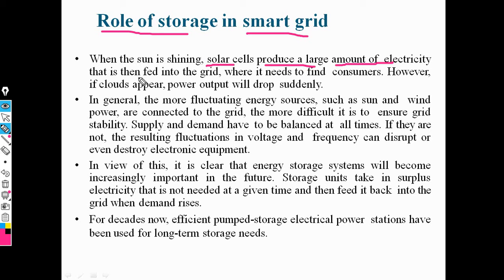The sunlight is a ray and totally depends on the day. The sun shines and gives a large amount of sunlight, which is very useful to transfer into electrical energy with the help of a photovoltaic cell. This sunlight is connected to the grid and stores a large amount of power. Sun and wind are more fluctuating energy sources.